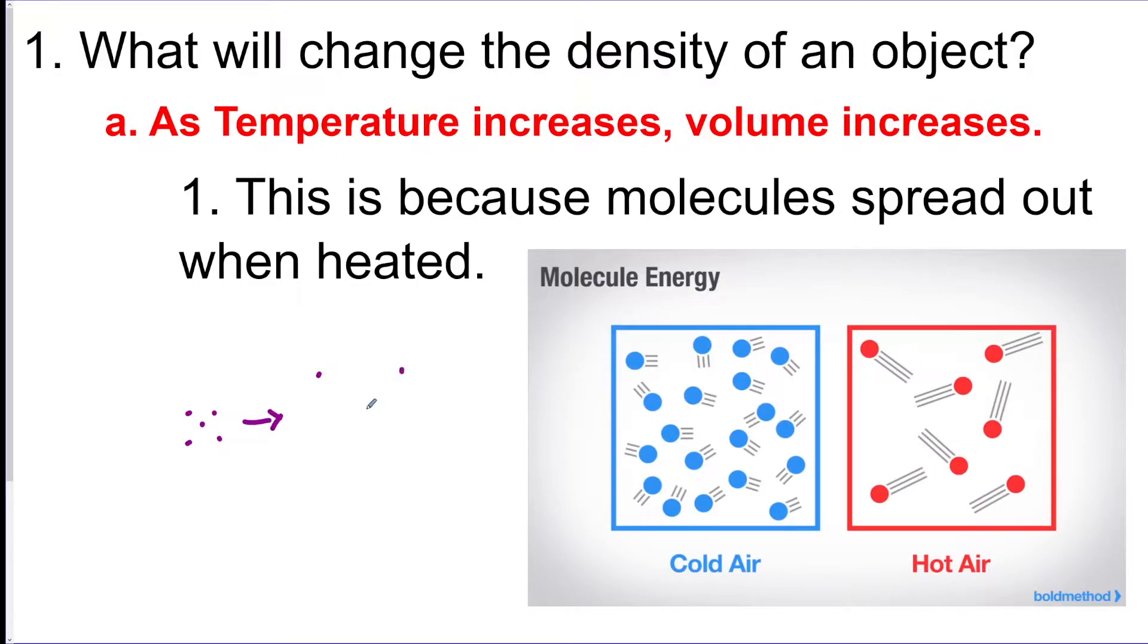So volume is how much space it takes up. If I put a box around this it only takes up that much space, those five. But if I put a box around these five, look, now they take up way more space. So as temperature goes up, volume goes up—more space.